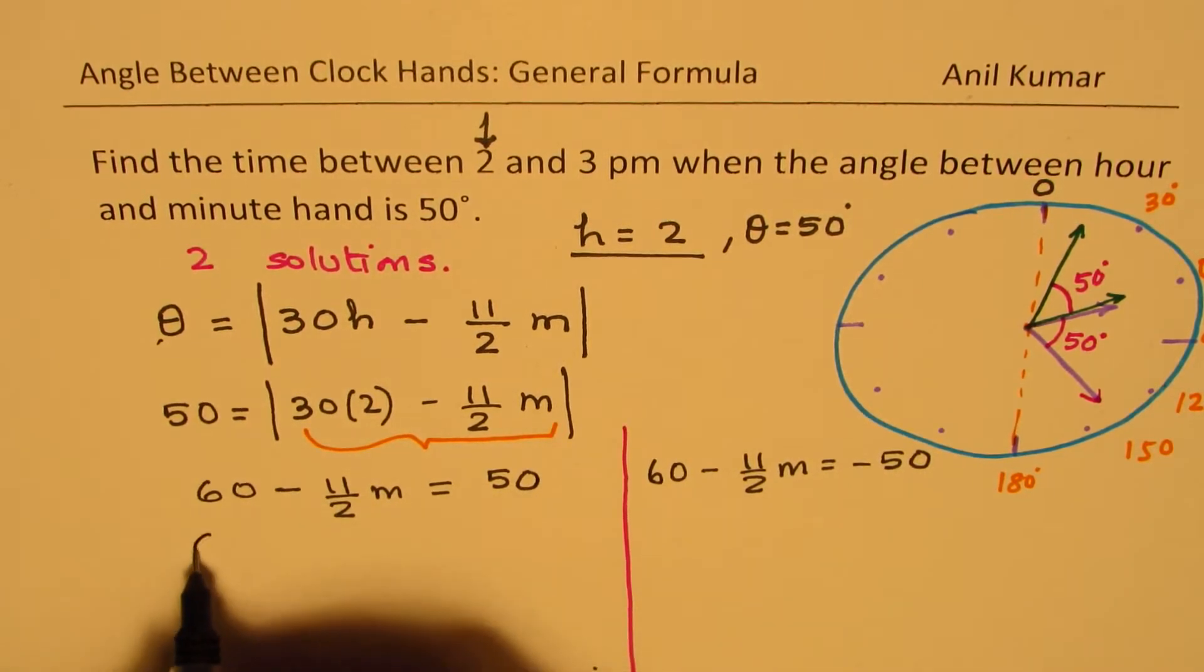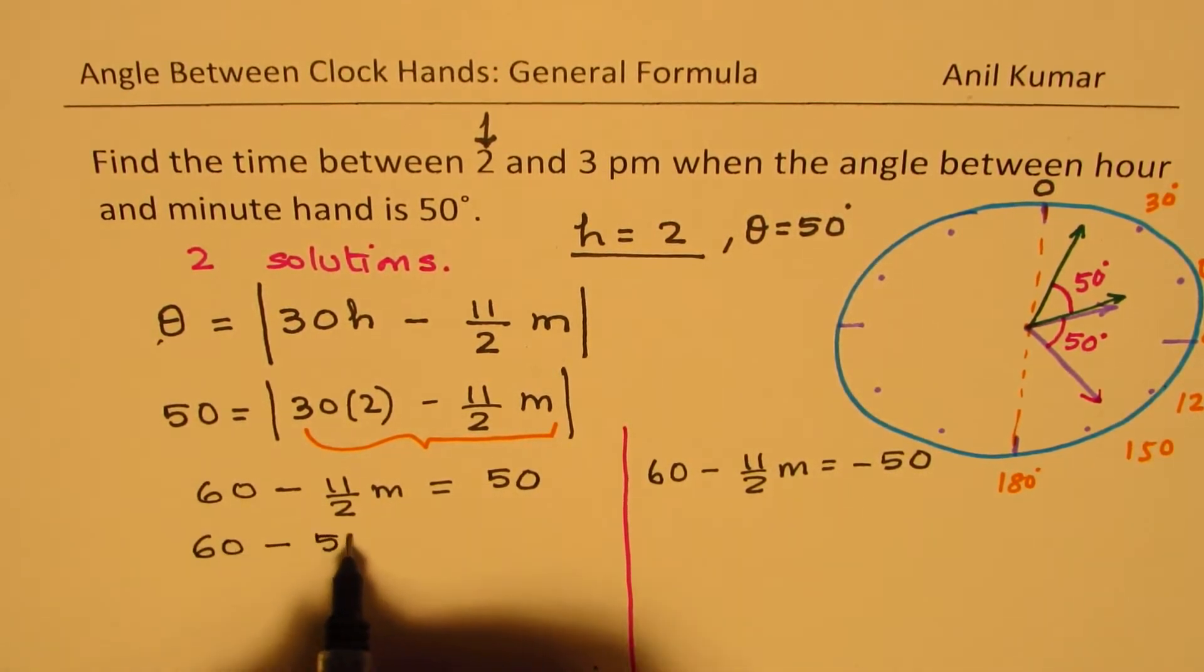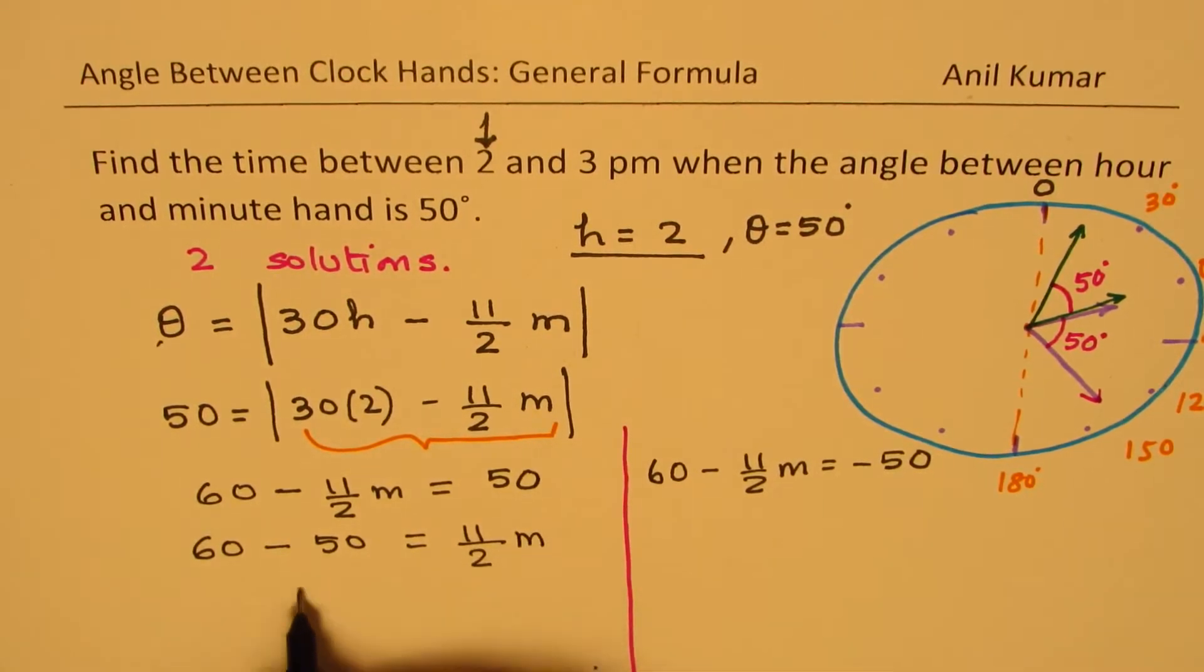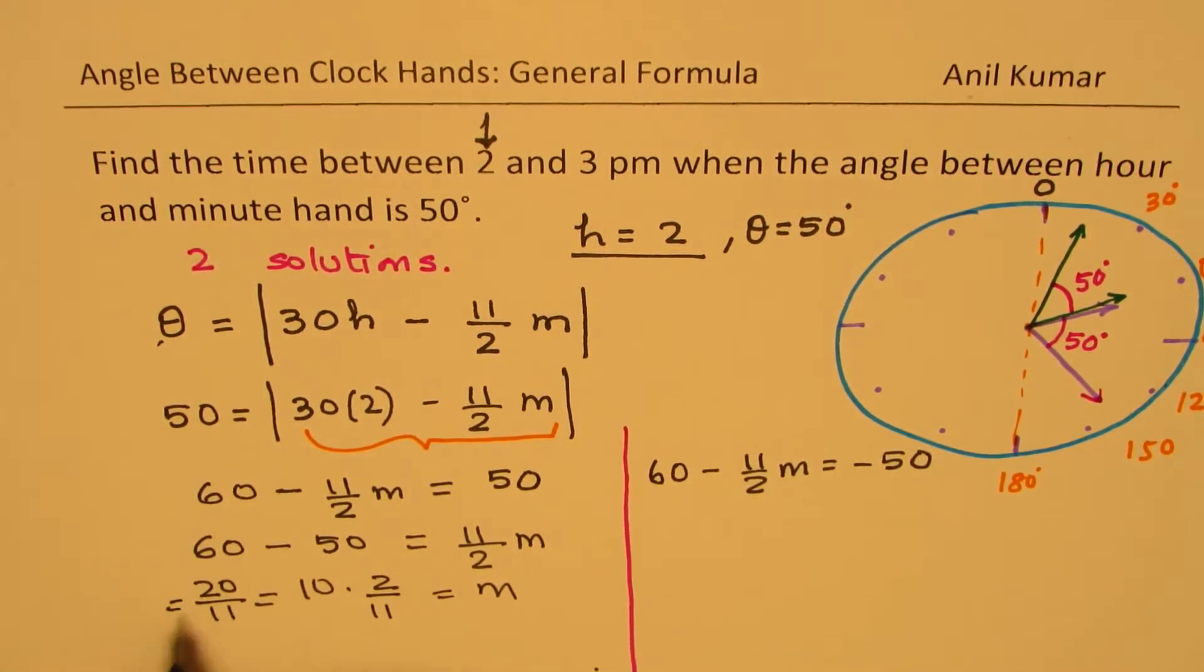So taking this to the right side, we get 60 minus 50 equals to 11 by 2 M, and that is 10. And then we'll multiply by 2 over 11 to get the value of M. So that is 20 by 11, which is 1, and 11 when you take away, you get 9 over 11 minutes, correct?